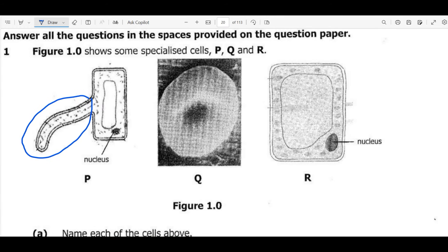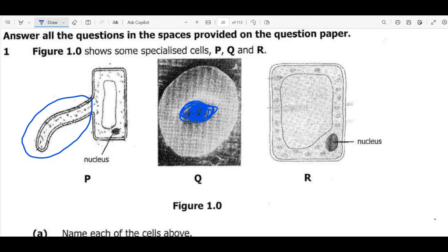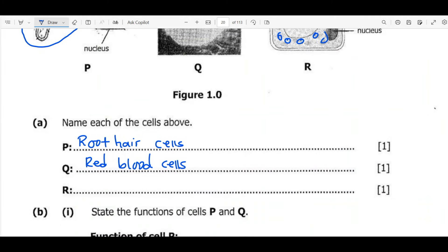For structure Q, we can look at the biconcave shape, which is in line with the red blood cells. Red blood cells are found in blood and their functions include transportation of oxygen, a small amount of carbon dioxide, and they give color to blood. For cell R, the structure is regular and has a lot of chloroplasts, so cell R must be a palisade cell. Palisade cells have a lot of chloroplasts and this is where the process of photosynthesis is high.